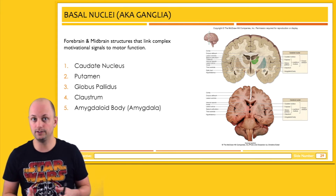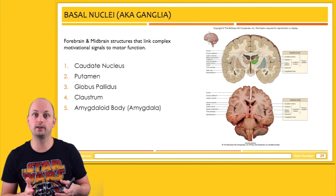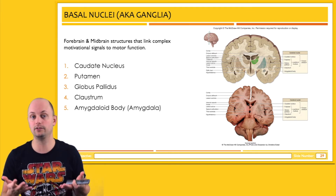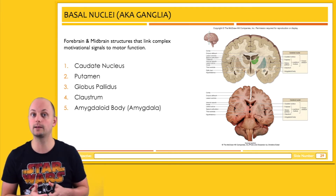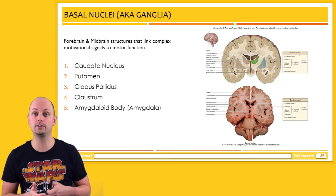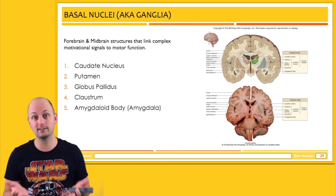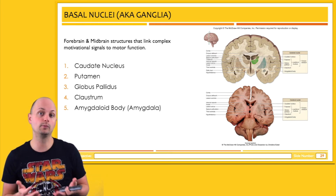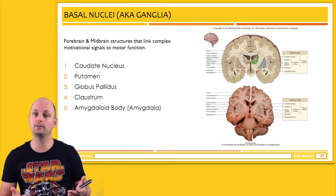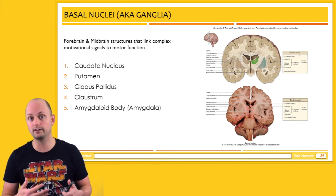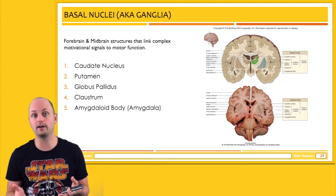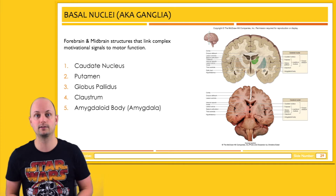They're also involved in some rhythmic or patterned limb movements, which is, for example, why the basal ganglia are sometimes associated with the disorder Tourette syndrome. If you're familiar with the disorder, you might know it's often characterized by unwanted movements and occasionally by verbal tics.